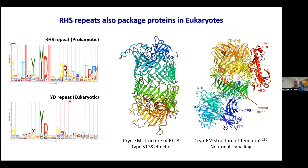Interestingly, RHS repeat sequences are also found in eukaryotes. The consensus sequence defining them was separately defined as a YD repeat sequence — both characterized by the heavily conserved central YD dipeptide — suggesting they're probably exactly the same thing, and that eukaryotes borrowed them from prokaryotes for the same purpose: packaging toxic or sensitive proteins within a protective shell. An example from another group is the structure of Teneurin, which likewise shows this characteristic YD/RHS repeat shell packaging something internally — in this case a neuronal signaling molecule important in early neuronal cell development.